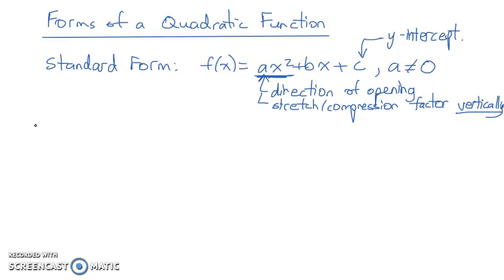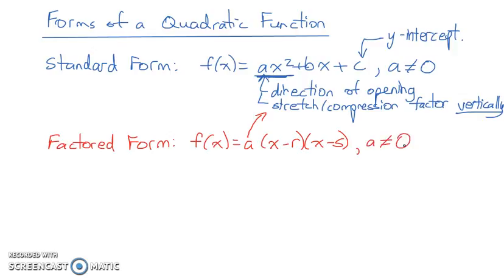The next form I want to look at here is factored form. The factored form of parabola looks like this. f(x) equals a times (x minus r) times (x minus s). And again, the a value has the same things as above. The a value is actually going to represent the same thing in all the different forms. Again, the a value cannot be zero. And we just have a line again. But the thing we know here is that the r value and the s value are the zeros, or the x-intercepts.